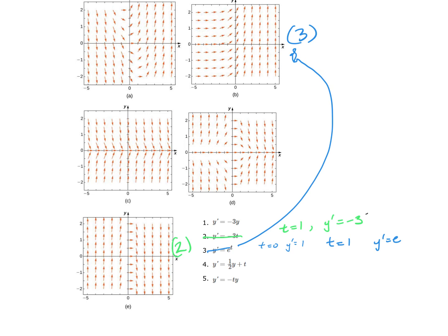For equation 1, the slope depends only on y, so the left and right sides of the y-axis must match—eliminating graphs b and d. It must be graph c. Checking: when y equals 0, y prime equals 0 (matches); when y equals 1, y prime equals negative 3 (matches). So equation 1 is confirmed as graph c. That leaves equations 4 and 5.